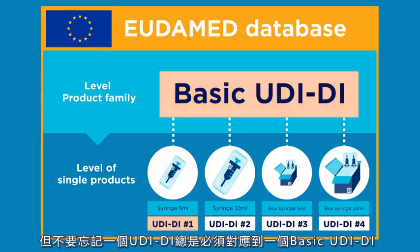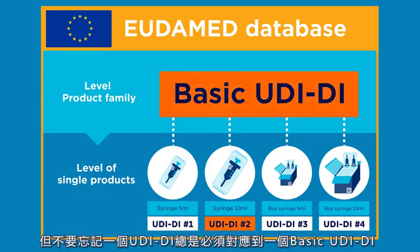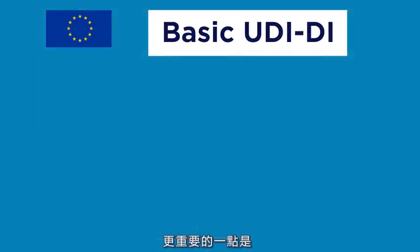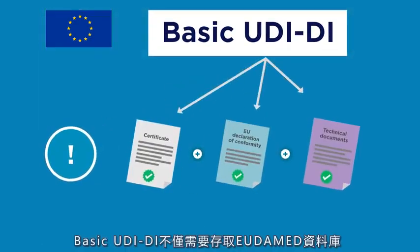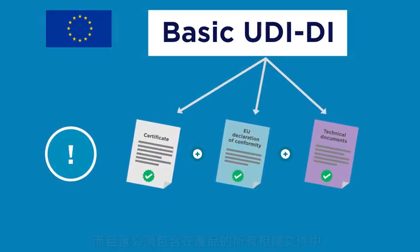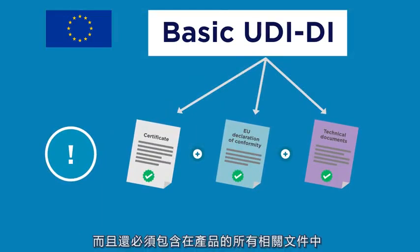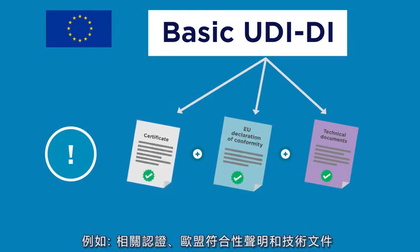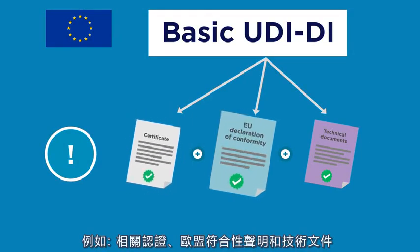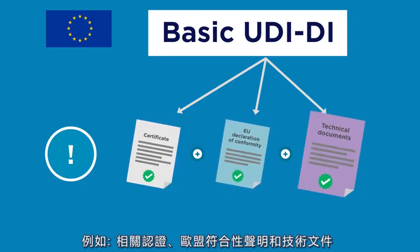A UDI-DI must always be linked to only one basic UDI-DI. The basic UDI-DI is not only required to access the EUDAMED database — it must also be included in all relevant documents for the products, for example certificates, EU declarations of conformity, and technical documentation.